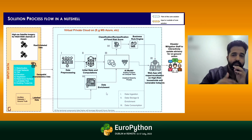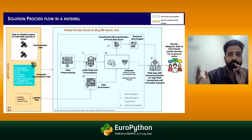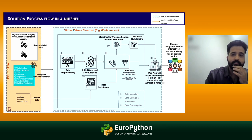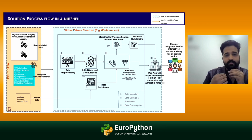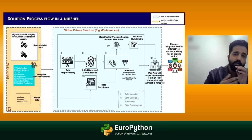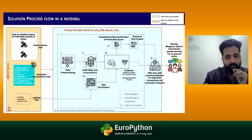What we generally do is data enrichment — bring it to a deep learning spatial format level, assign classification scores, run the AI model on that, and pull out the results in the format of GeoJSON or household-level risk, which I will show in the application format as well.